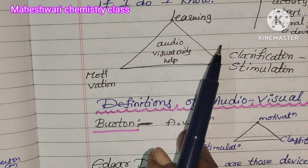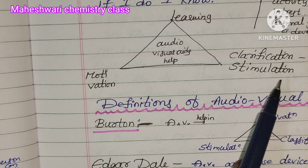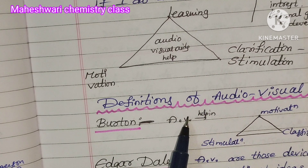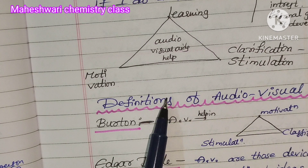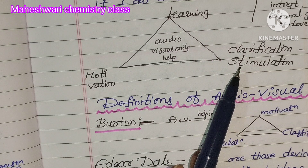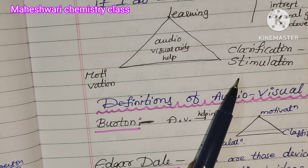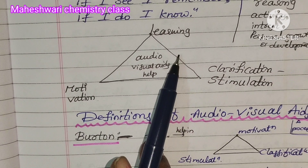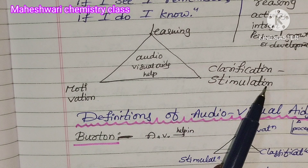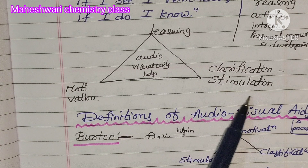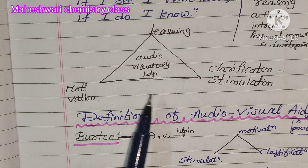Audio-visual ideas especially help learning in the following ways: motivation, learning, clarification, and stimulation. This forms a pattern — a triangle pattern — of motivation, learning, clarification, and stimulation.